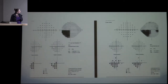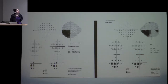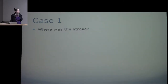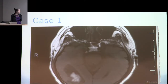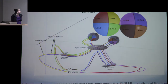Here is his Humphrey visual field. How would you describe this defect? It's a quadrantanopia — specifically a left lower quadrantanopia. Where was his hemorrhagic stroke? Right parietal. And indeed, here it is on his scan in the right parietal lobe.